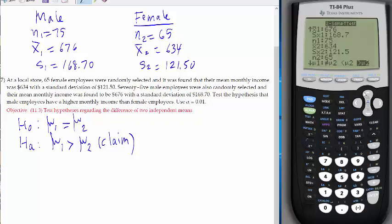Now, what is the alternative sign? It's a greater than. Enter. Pooled, keep pooled by default as no. Pooled means it's asking if the population variances are equal. Since we don't have any information about them, we just assume that they're not. And then calculate.